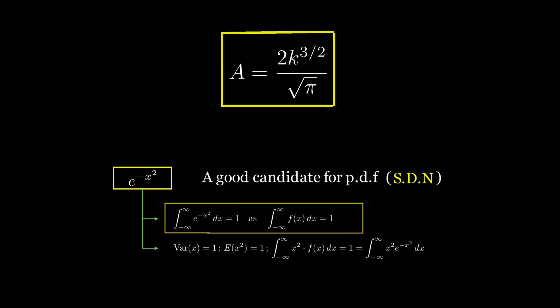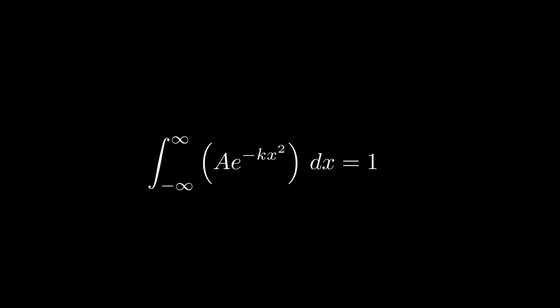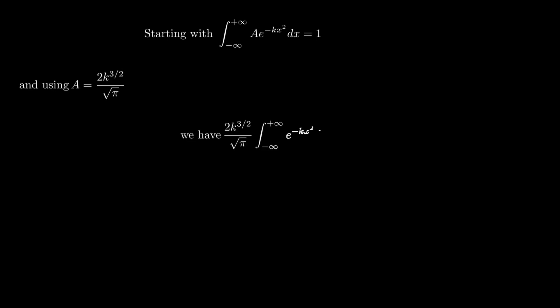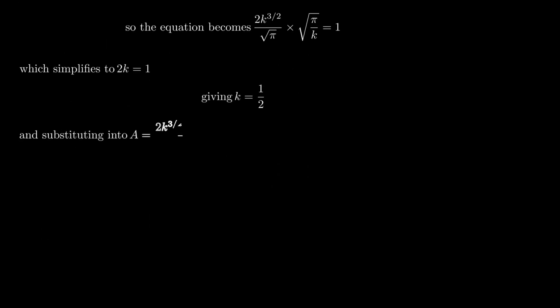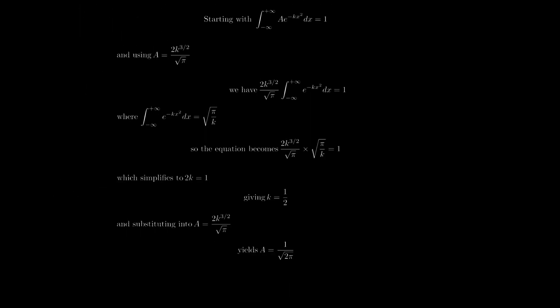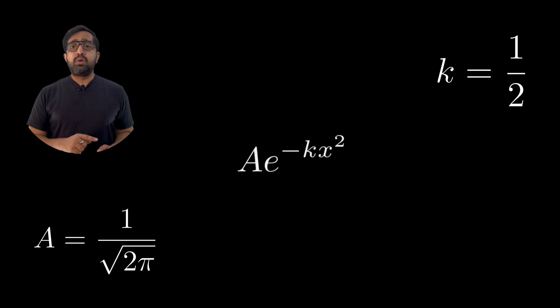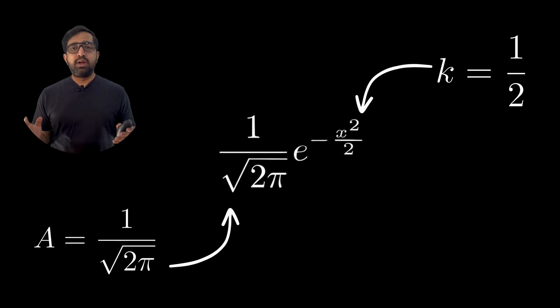Two constants, two equations, two variables. Now we plug a = 2k^(3/2) / √π into the PDF and integrate from minus infinity to plus infinity — which we know must equal 1. After another long derivation with integration and substitution, we get a = 1/√(2π) and k = 1/2. This gives us the final equation of standard normal distribution: 1/√(2π) · e^(−x²/2). And this is how Mr. Gauss would have reached this famous equation.